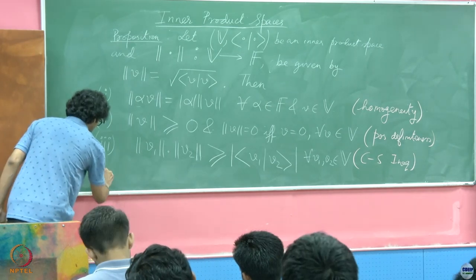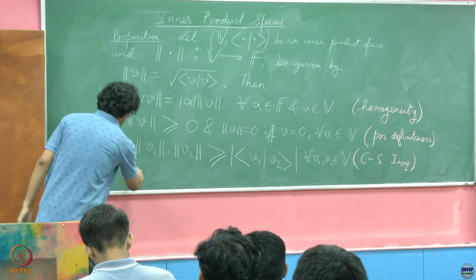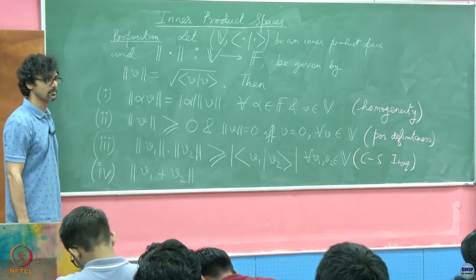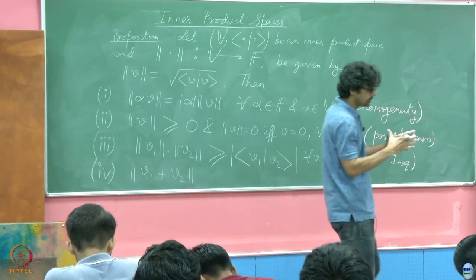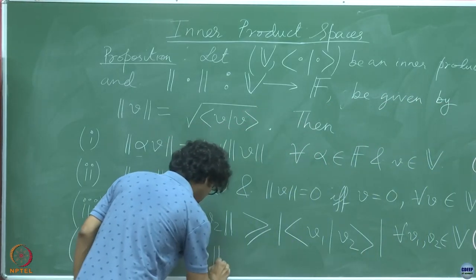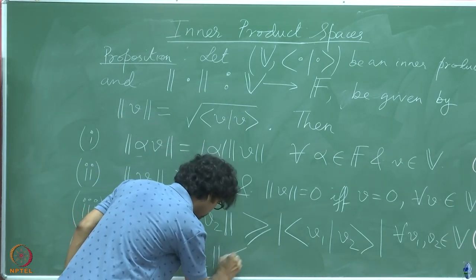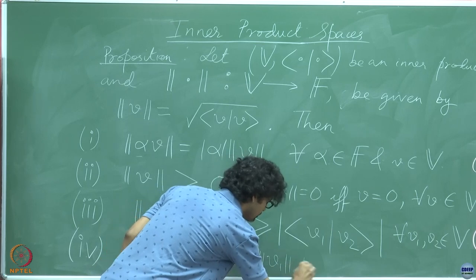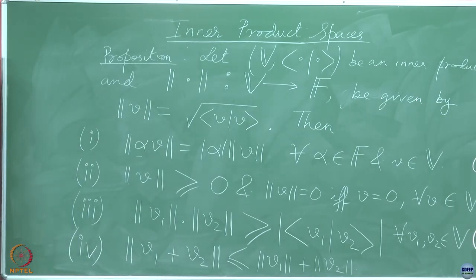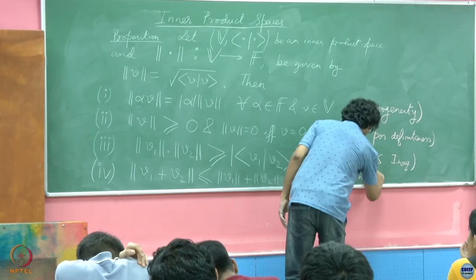The fourth important property is also another inequality — can you guess? The triangle inequality. So we have ‖V₁ + V₂‖ ≤ ‖V₁‖ + ‖V₂‖. The triangle inequality basically says the sum of two sides of a triangle is always going to be greater than the third side. They can only be equal if it is a degenerate triangle when they are all along the same line. This is the triangle inequality.